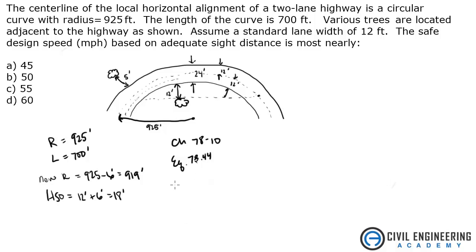Equation 78.44 says that stopping sight distance equals R, which we're going to use 919, divided by 28.65 times the arc sine of R, 919, minus HSO, which was 18, divided by R, 919. Punch that in, I get 364.3 feet.